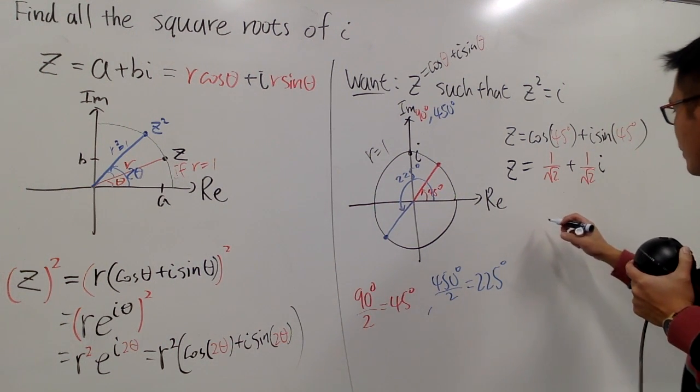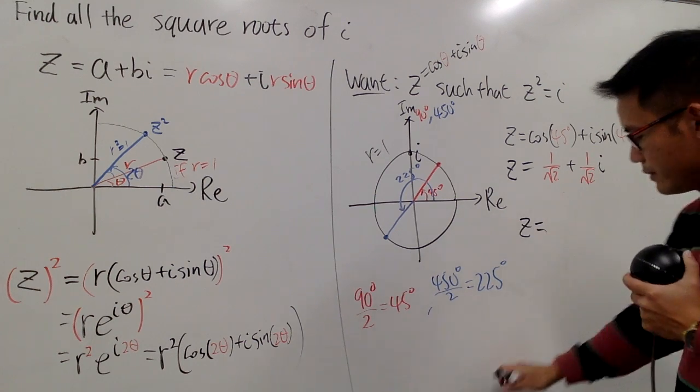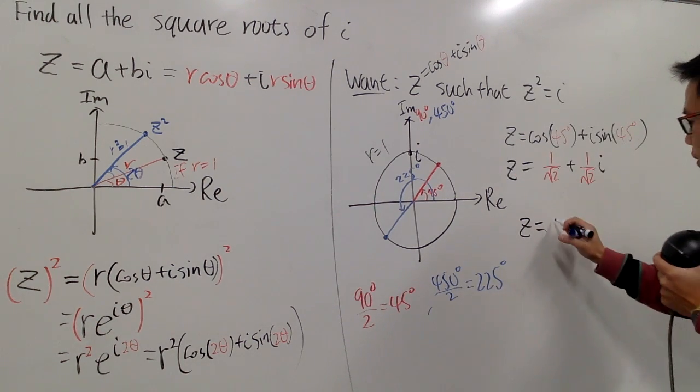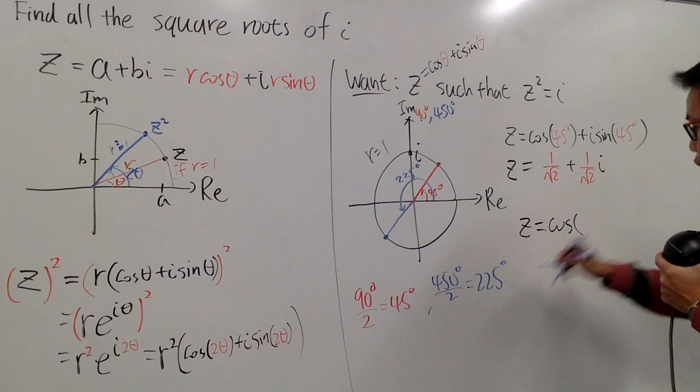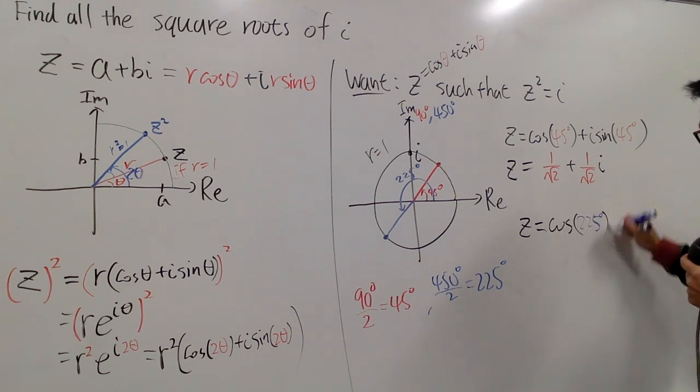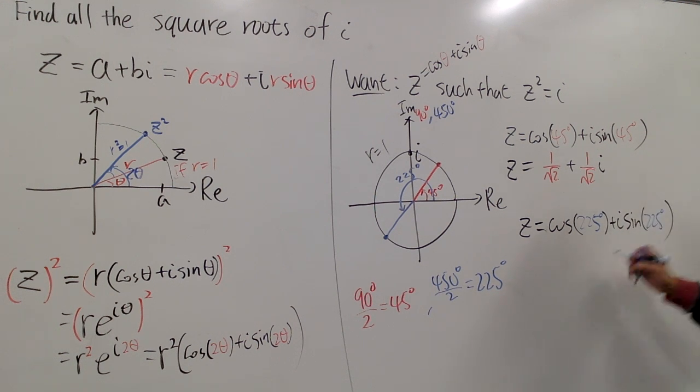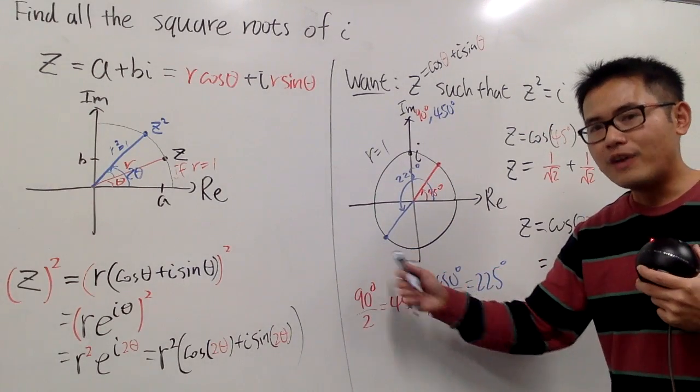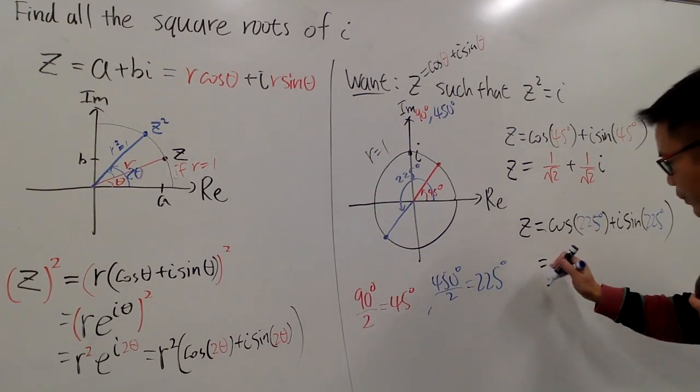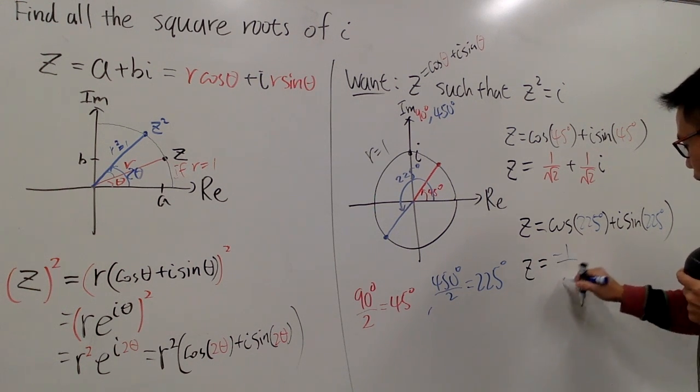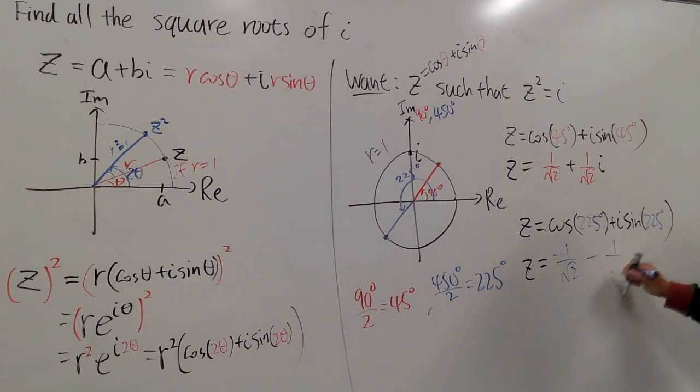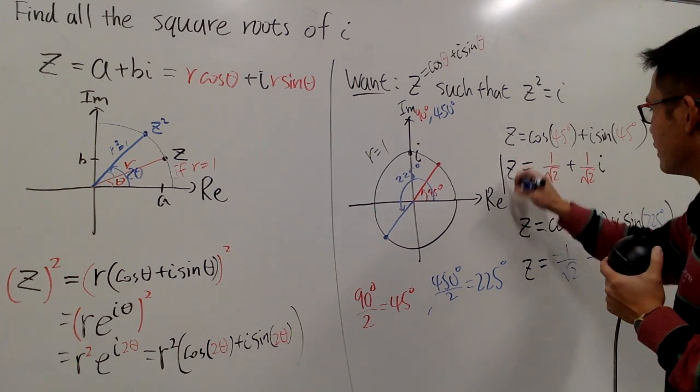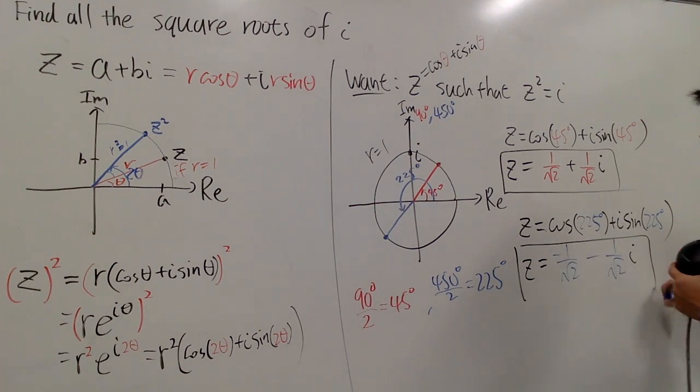And the second one, I will write it down here. It's equal to, with a blue marker for the angle. Cosine of 225 degrees plus i times sin of 225 degrees. And now, this is seriously just a nice reflection here and here. The x and y values both become the negative version. So we have z equal to negative 1 over square root of 2, minus 1 over square root of 2. And put the i right here. So, here is the first answer. Here is the second answer.